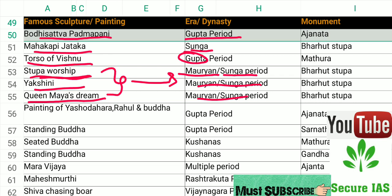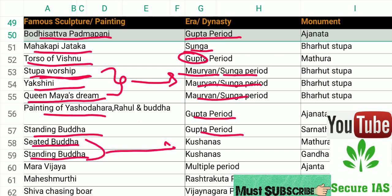Painting of Yashodhara belongs to the Gupta period. Standing Buddha from the Gupta period. Seated Buddha and Standing Buddha are associated with the Kushana period.